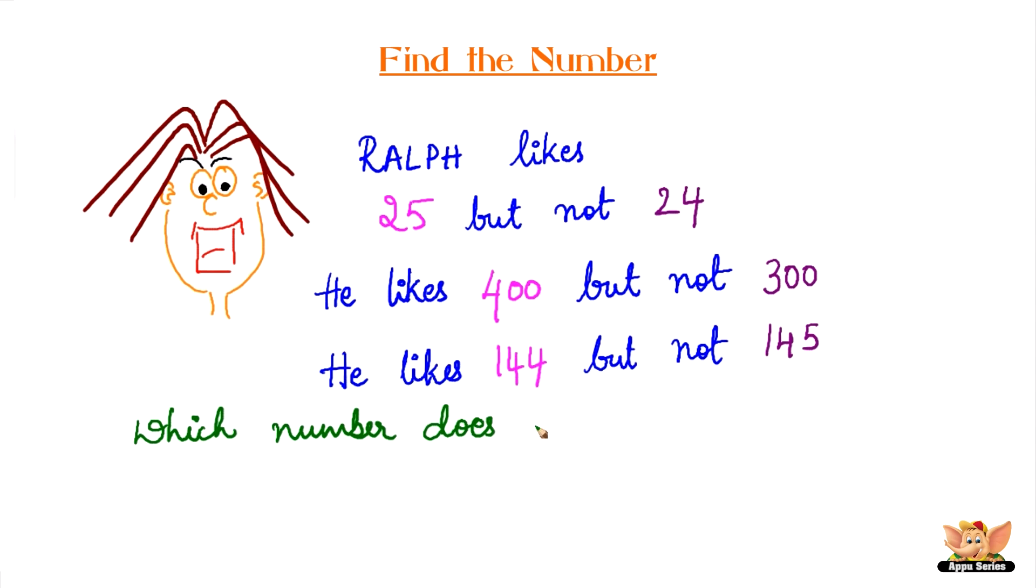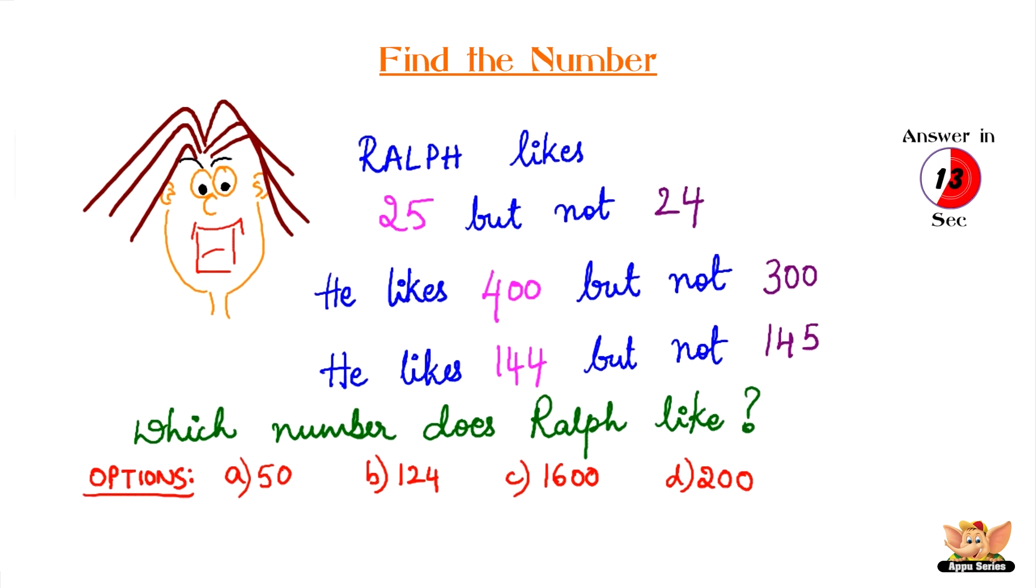Which number does Ralph like? A: 50, B: 124, C: 1600, D: 200. Your time starts now. Are you getting closer to your solution? Answer is C: 1600. Ralph likes only the square of a number.